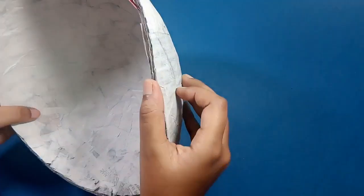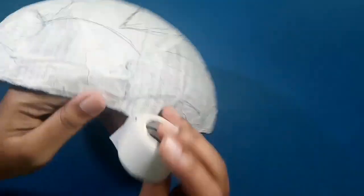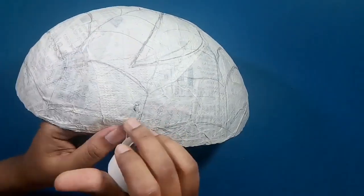As you can see, each layer of newspaper is visible here. So to hide this, we can cover it using masking tape.